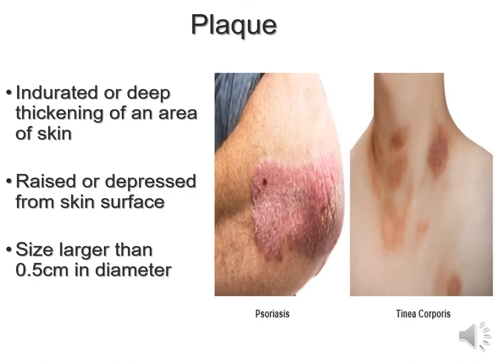Plaque is indurated — deep — and is a thickened area of skin. It can be raised or depressed from the surface of the skin. Size is typically larger than 0.5cm in diameter, and this can be related to certain conditions such as psoriasis or tinea corporis.